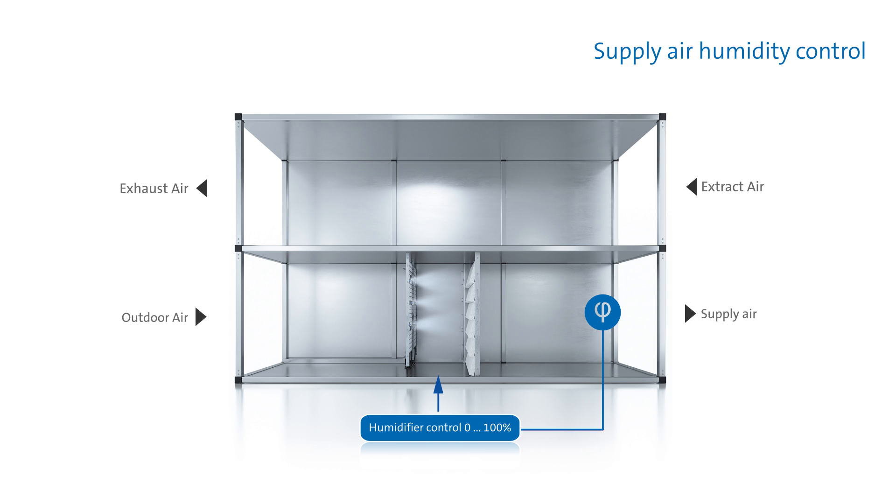In the supply air humidity control system, the control sensor is installed in the air supply duct in front of the humidifier. In this case, control is only based on the conditions in the unit itself.